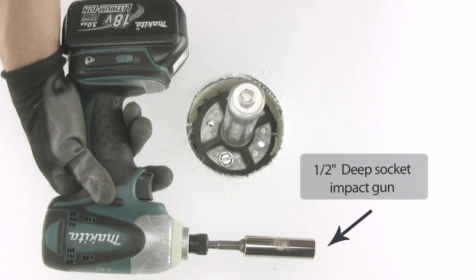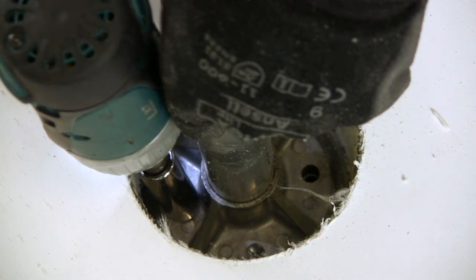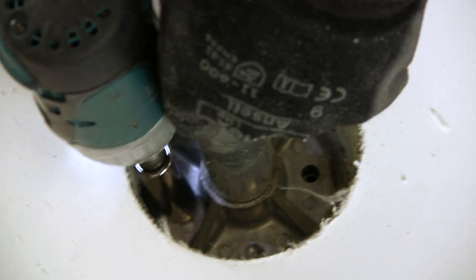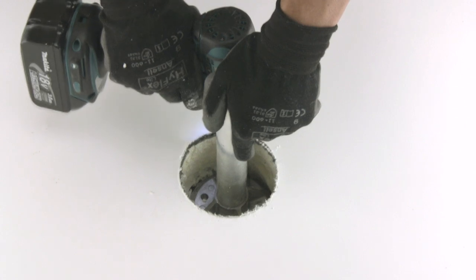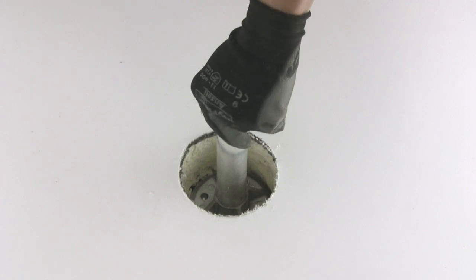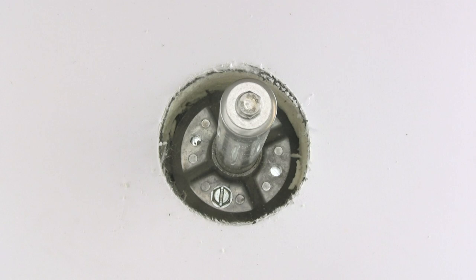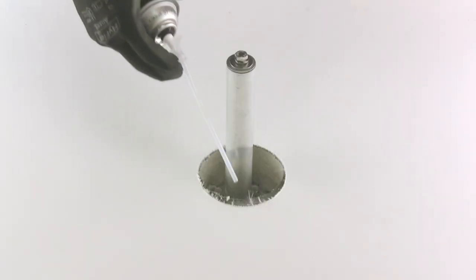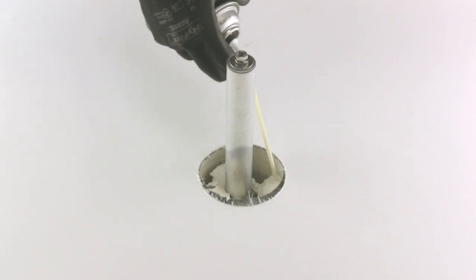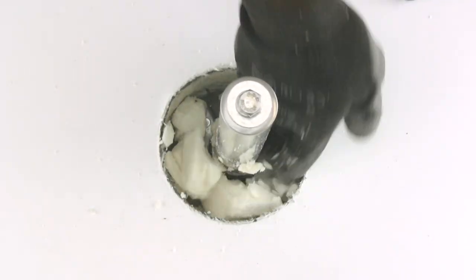Use a half-inch deep socket impact gun to fasten your bolts. Once you have securely bolted down your mount, backfill the hole using spray foam. Alternatively, you can backfill the hole using the larger pieces of insulation that you cored out.